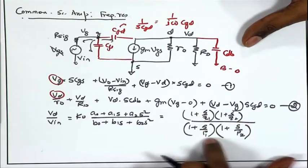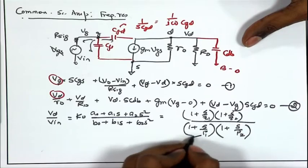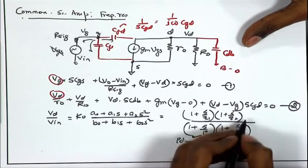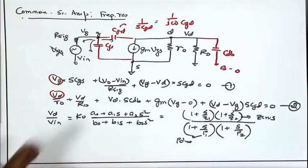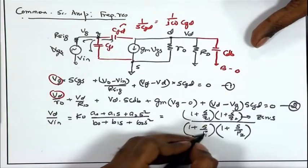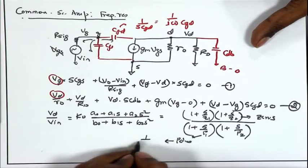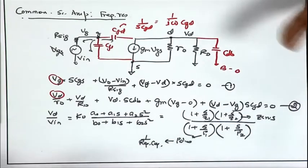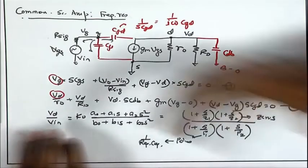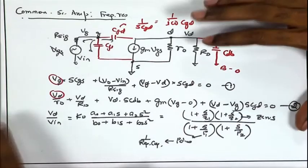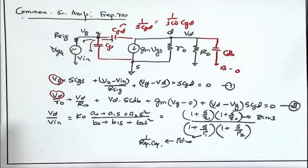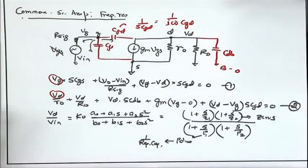P₁ and Z₁ are called poles and zeros, which depend on the RC time constants seen in the circuit. In general, P₁ will depend on 1/(R_equivalent · C_equivalent). This direct analysis method is cumbersome, especially for more complicated circuits with more nodes and more unknown voltages — it leads to more and more equations that we cannot solve by hand calculation.